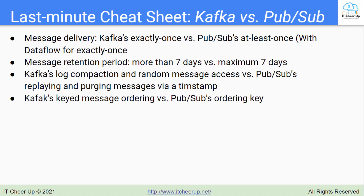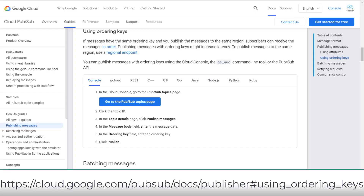The last difference is message ordering. Kafka provides keyed message ordering to guarantee message ordering within a single partition of a topic. PubSub has an ordering key to guarantee messages successfully published by a single publisher for the same ordering key in the same region.